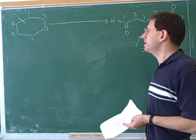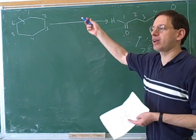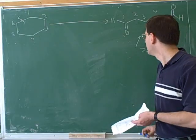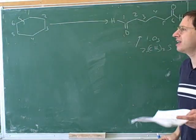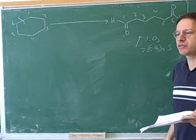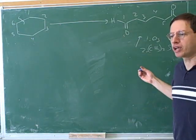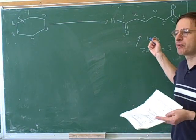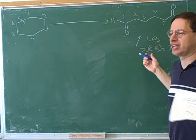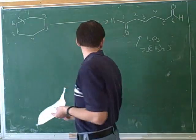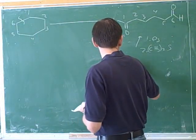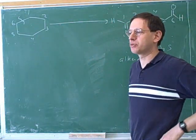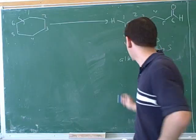That should have been easy because we're cleaving a carbon-carbon bond, and this is pretty much the only way we know how to do it. You're almost ready to declare victory, but then we caught ourselves and said, who does this operate on? Well, it operates on an alkyne, and this is not an alkyne. So you have to say to yourself, first of all, I need to make this into an alkyne.